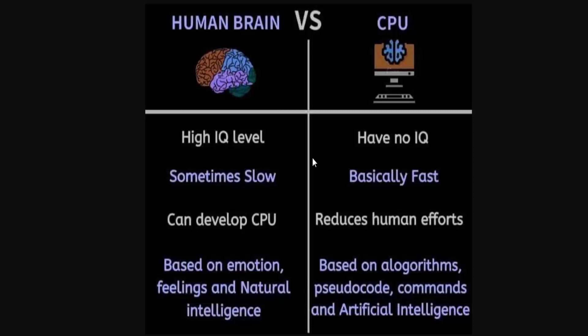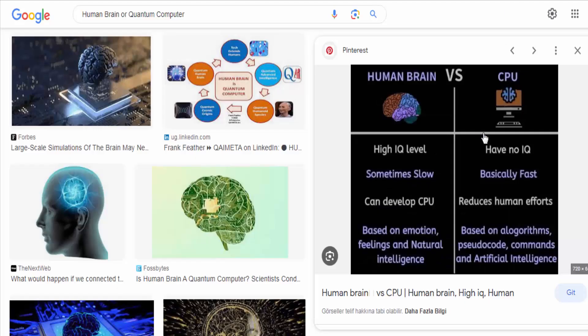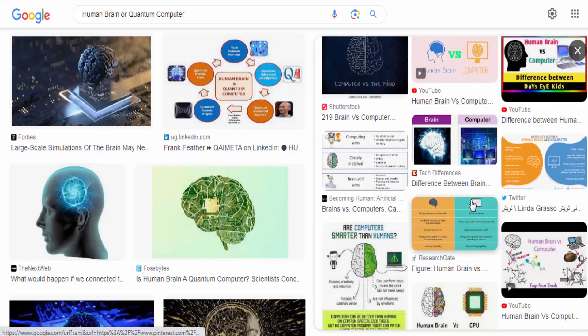While the human brain is incredibly adaptable and capable of performing a wide range of tasks, it has limitations in terms of processing speed and storage capacity.